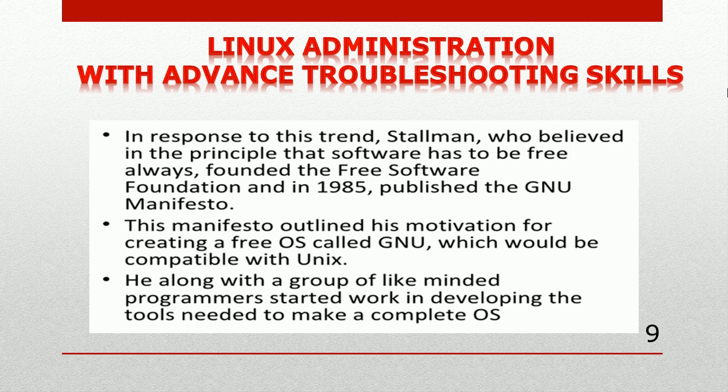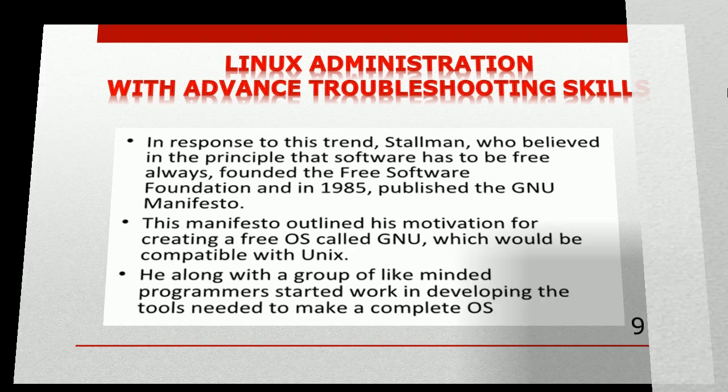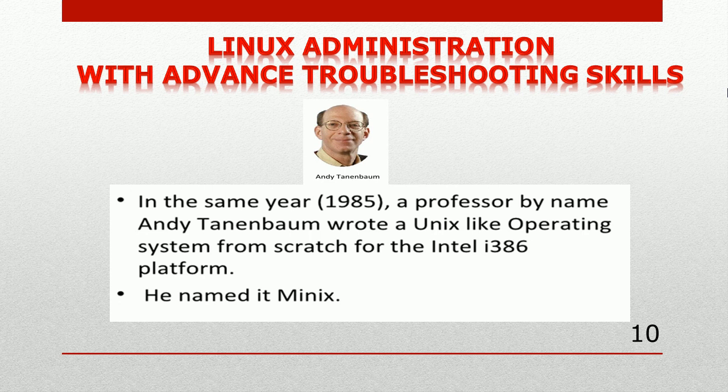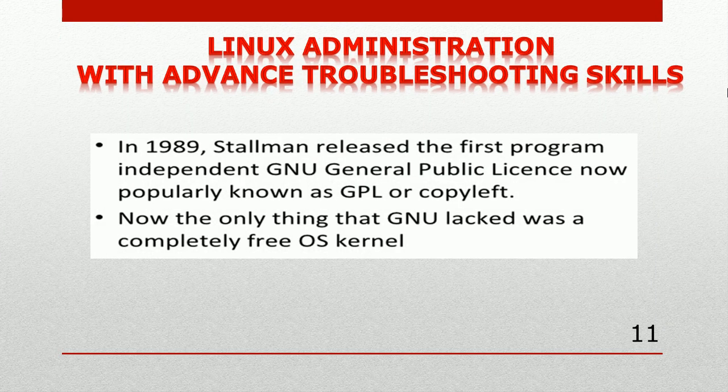The GNU Manifesto outlined Stallman's motivation for creating a free OS called GNU, which would be compatible with UNIX. He and a group of like-minded programmers started developing the tools needed to make a complete OS. Also in 1985, a professor named Andy Tanenbaum wrote a UNIX-like operating system from scratch for the Intel i386 platform — this was called Minix, the first UNIX-like operating system designed for the Intel platform.